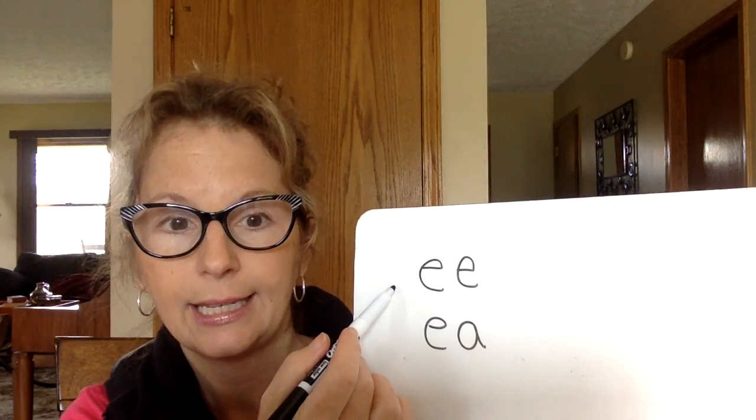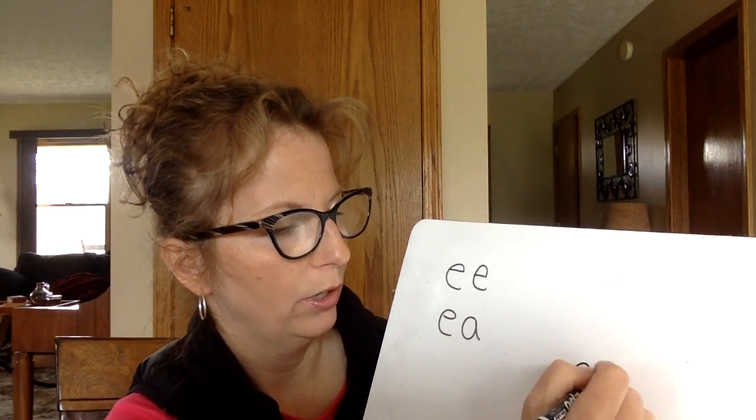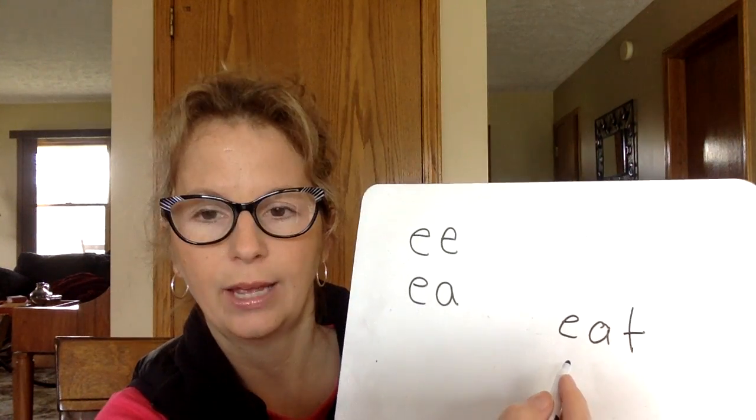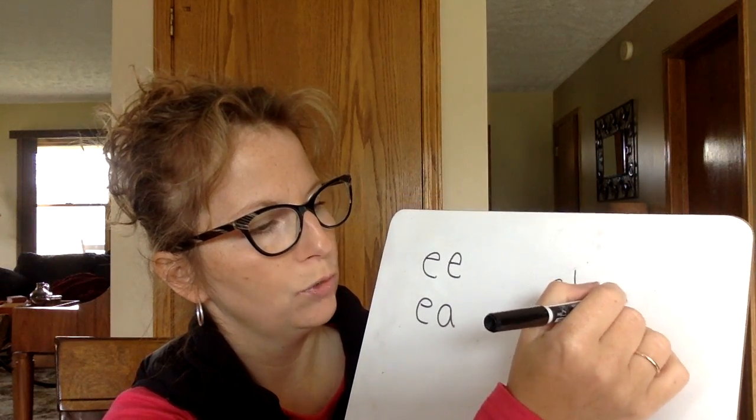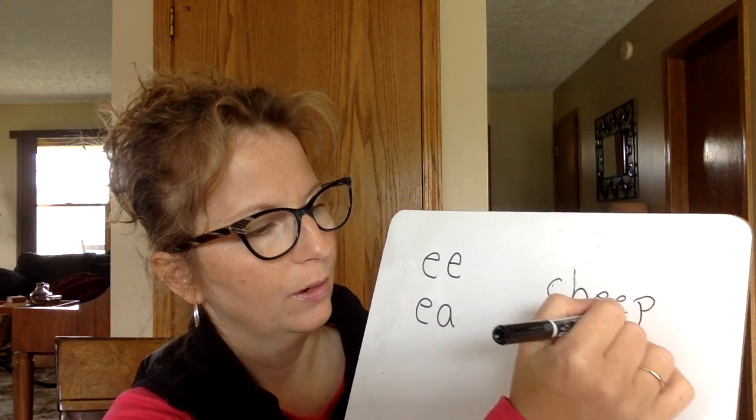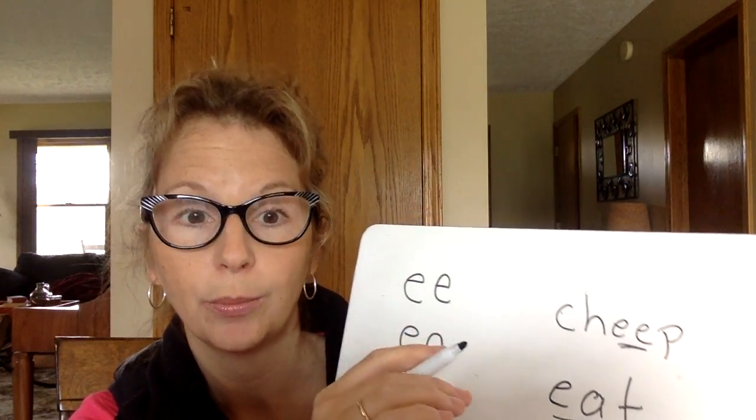Since we started these computer lessons, we've worked on two ways to make the E sound. Who remembers those two ways to make the E sound in a word? Write them down on your board. E-E and E-A. So like in the word 'eat,' we have E-A making the E sound. And when a bird says 'cheep cheep,' we have E-E making the E sound in 'cheep.'